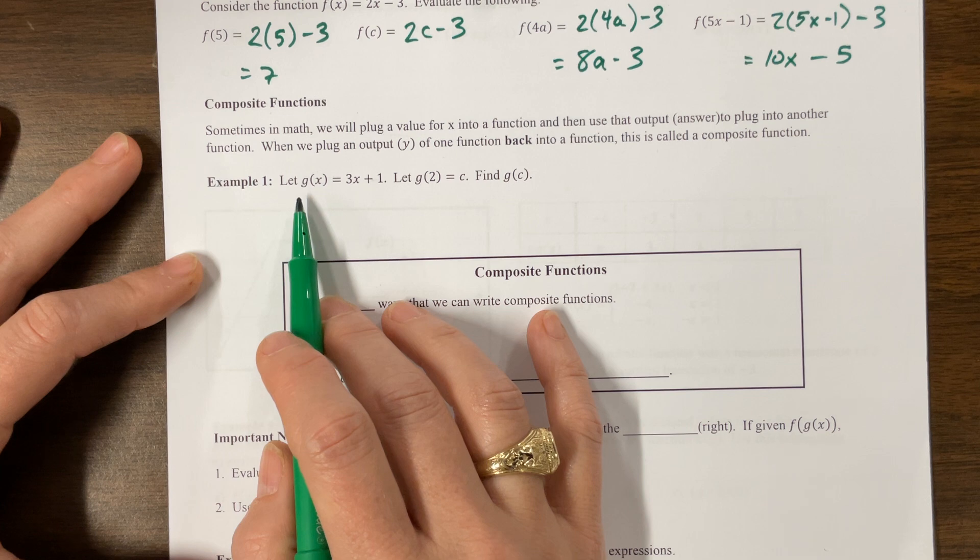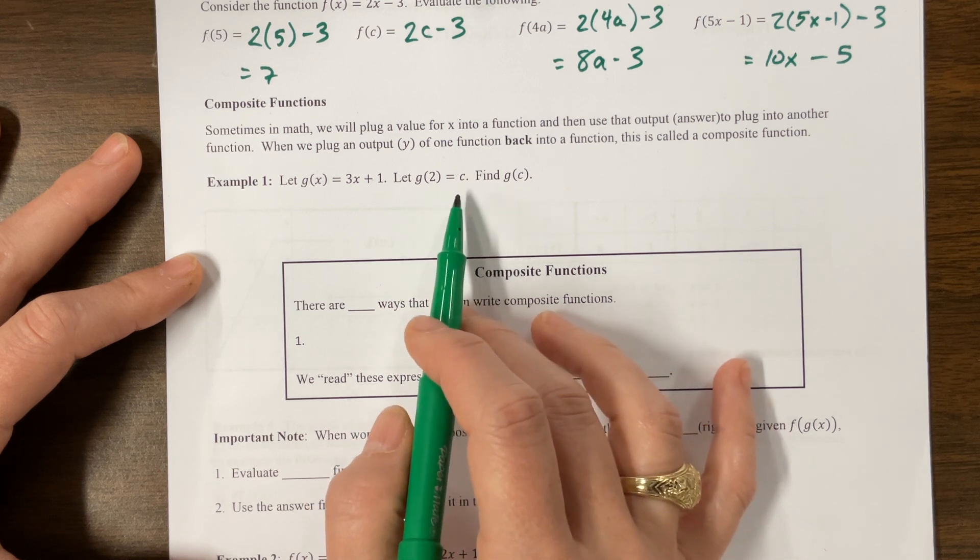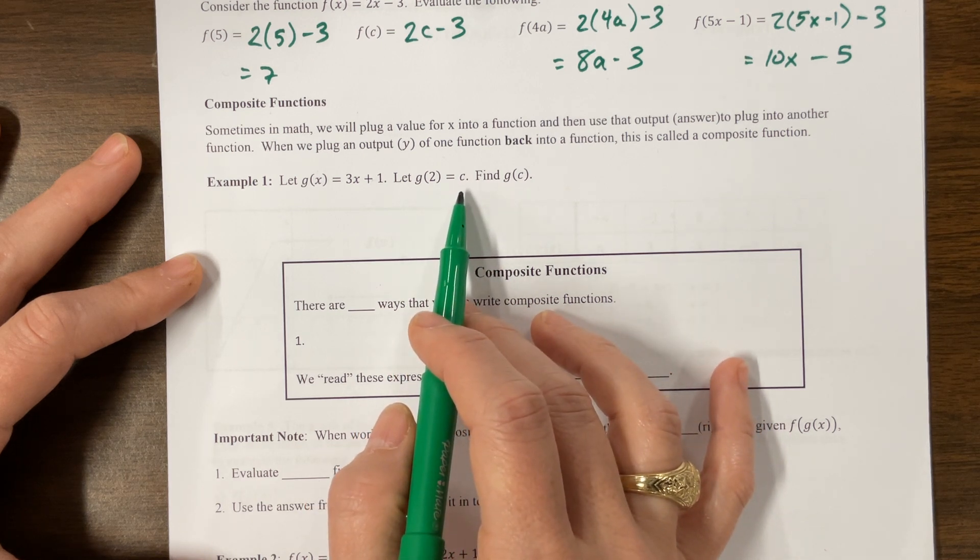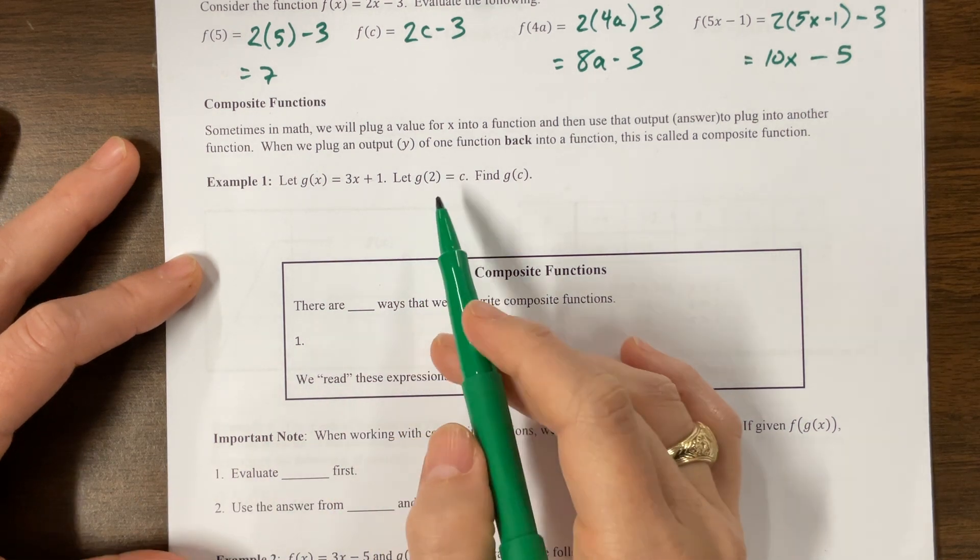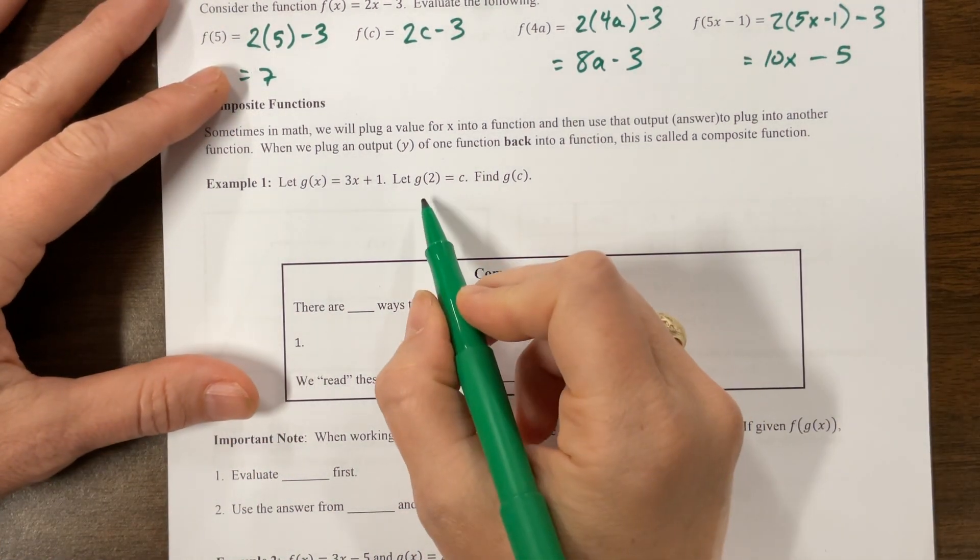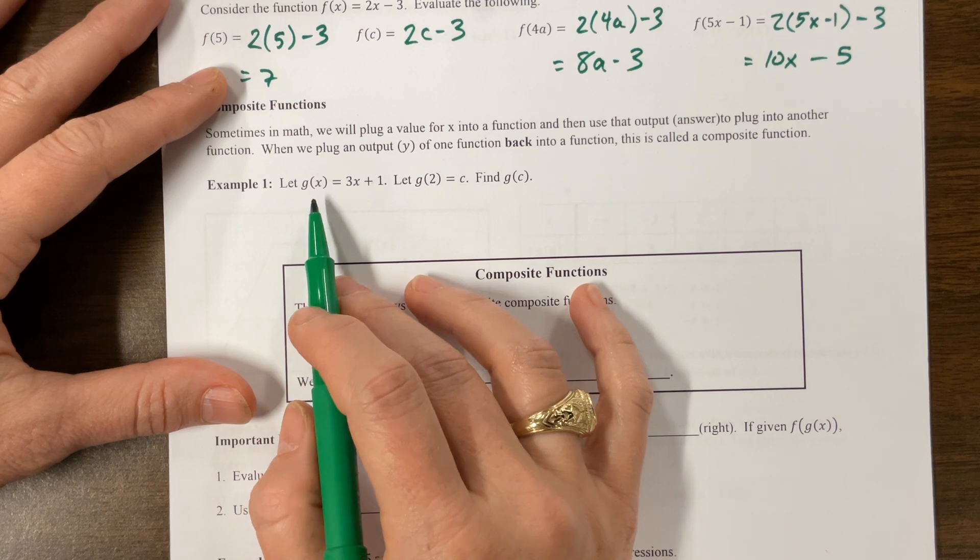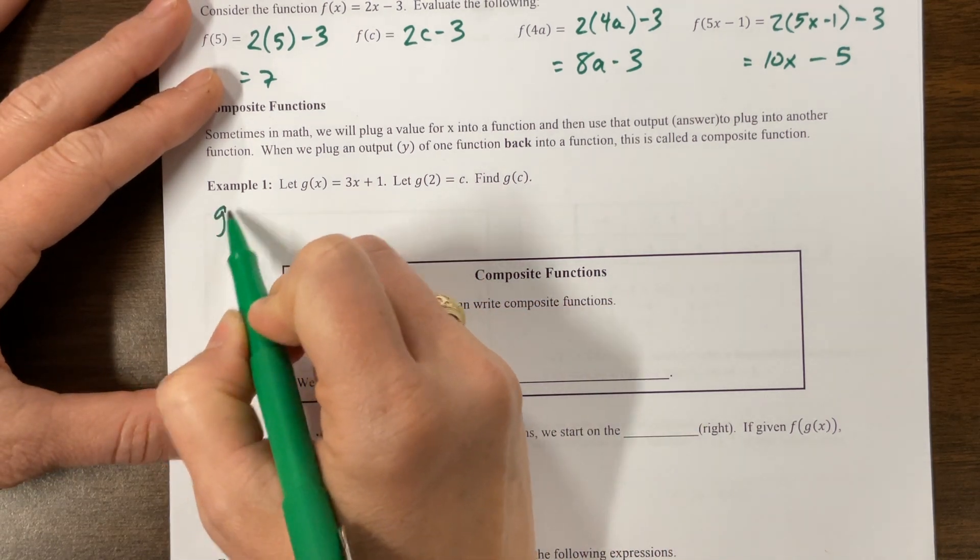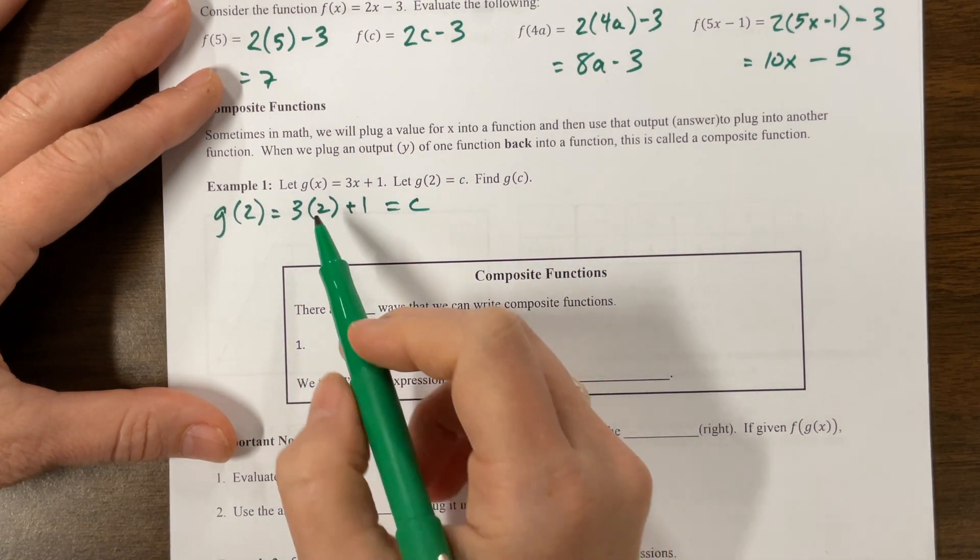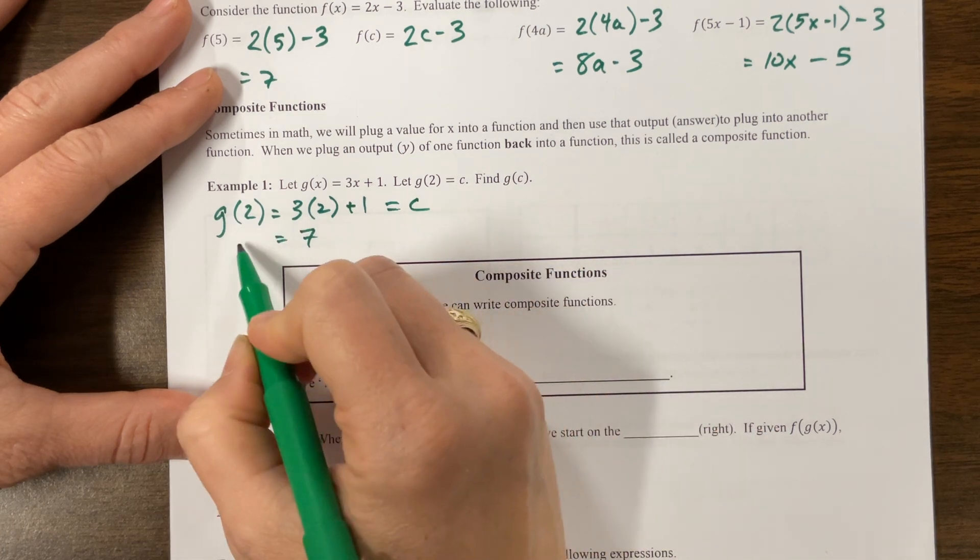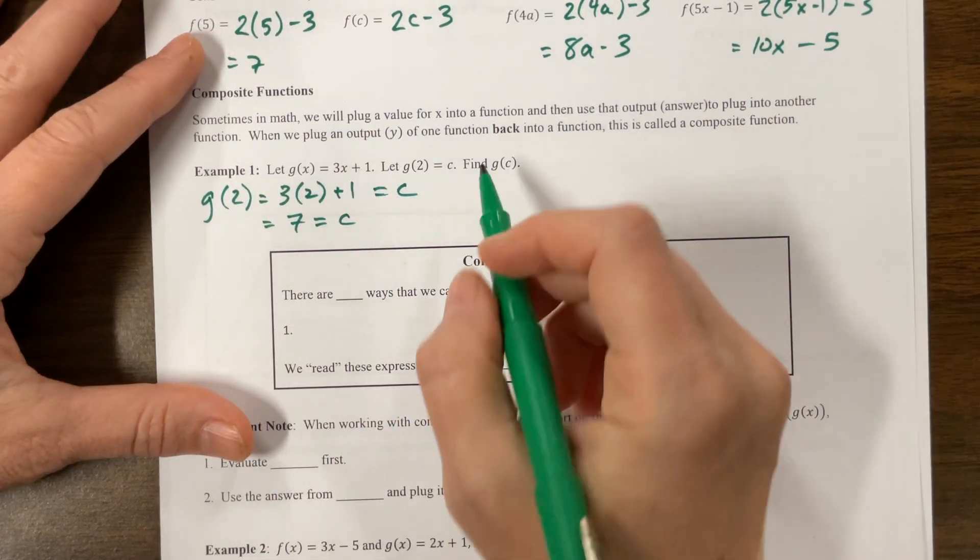What are they saying here? Find g of c. That's interesting. I have not seen a problem quite written like this. What we know is that g of 2 would be equal to 3 times 2 plus 1, and they're saying that this is equal to c. So this is equal to 7. So g of c would be equal to, g of 2 is equal to 7, 7 is equal to c, C is equal to 7.